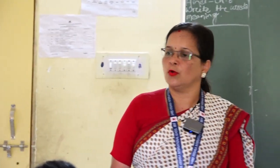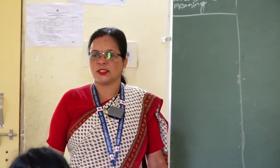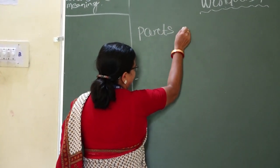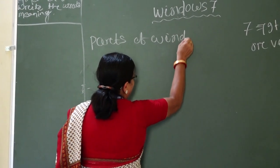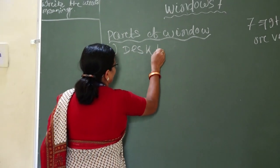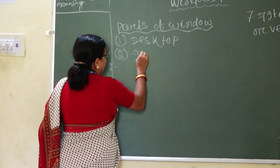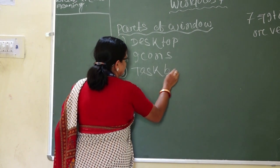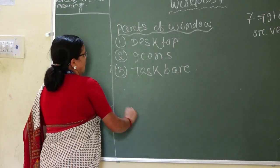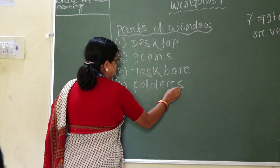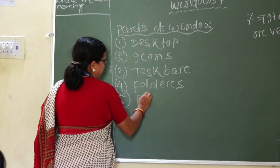Now we will discuss what are the parts of Windows. The parts of Windows are: Number 1, desktop. Number 2, icons. Number 3, taskbar. Number 4, folders. Number 5, files.